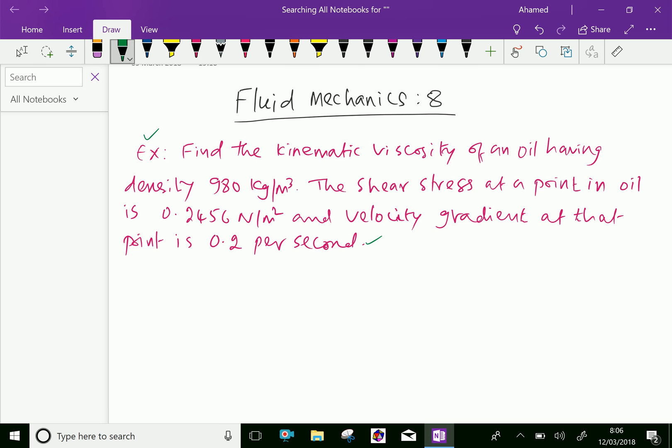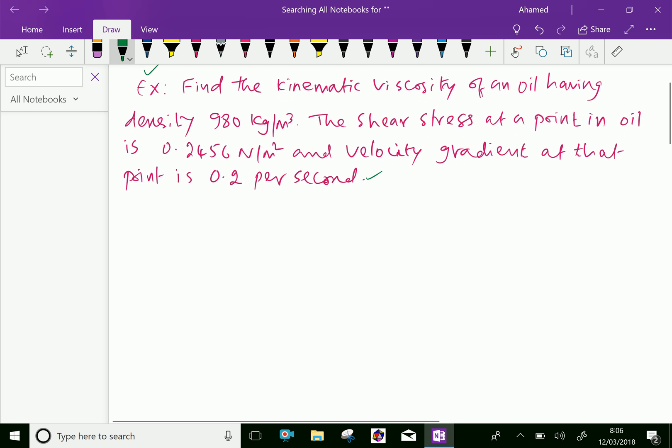Here the given things: mass density of an oil, ρ equals 980 kg per meter cube.